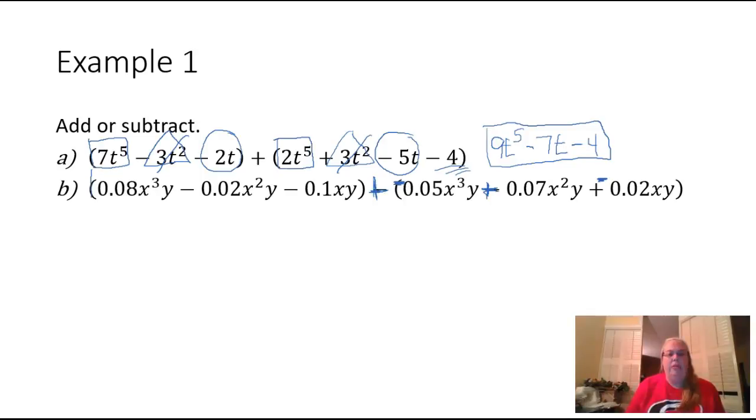So I have 0.08 and I have an x to the third and a y. Its like term is going to be right here, the negative 0.05, because it also has an x to the third and a y. And we're adding these.